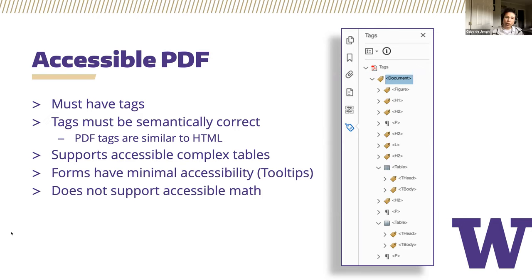Before you try to make a complex table accessible in PDF, see if you can simplify the table in the native application. For example, if the table has a series of sections, would it reduce confusion to divide it into a series of tables, one for each section?